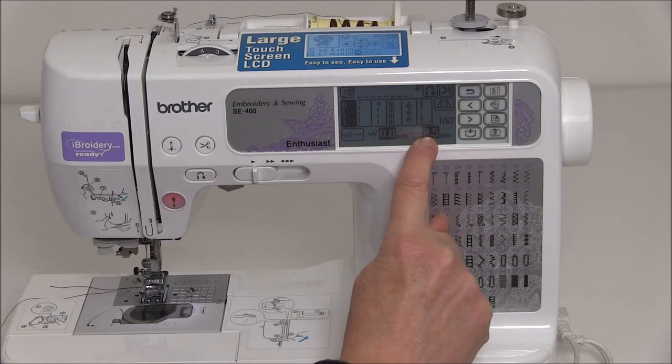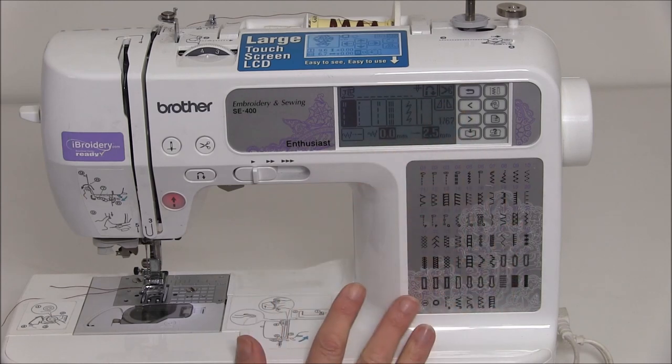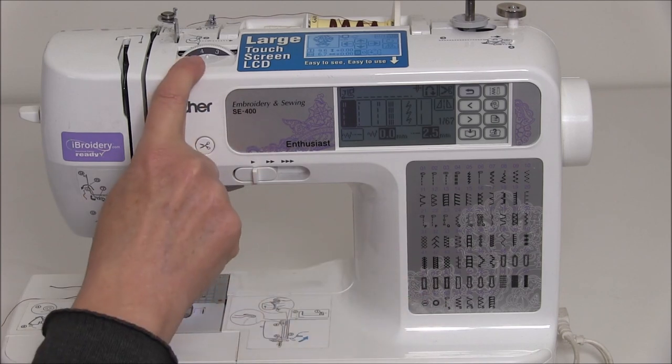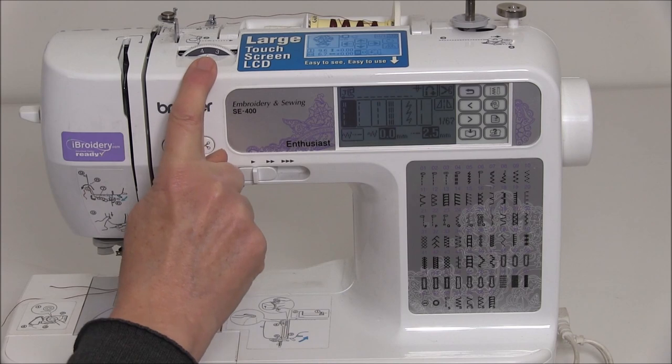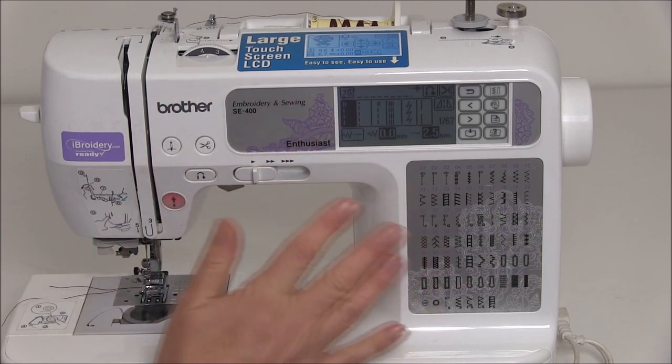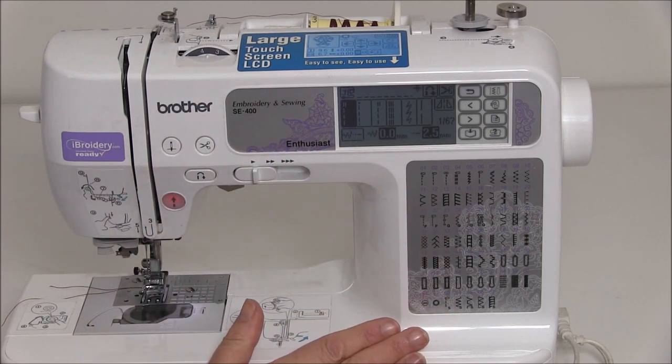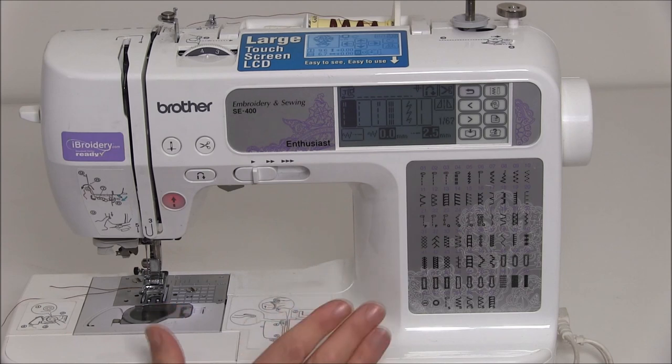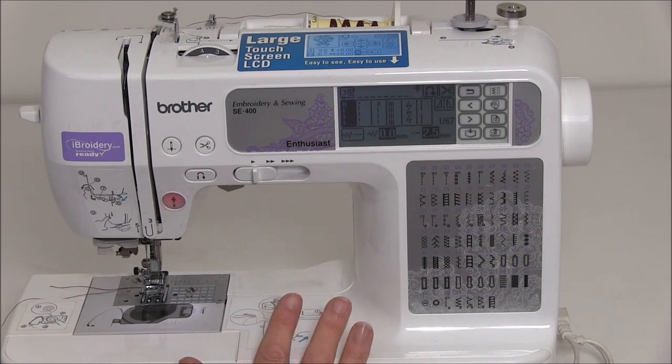My stitch always stays on two and a half for length. The other thing we need to think about is our tension. Don't fiddle with the tension guide unless you really need to, and we'll deal with that a little bit further down the track. What we're going to do now is just get two pieces of fabric cut exactly the same size and sew a sample.